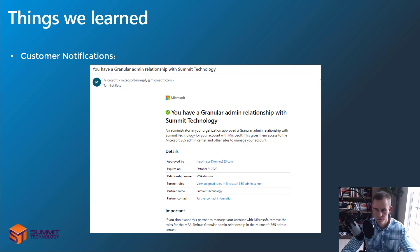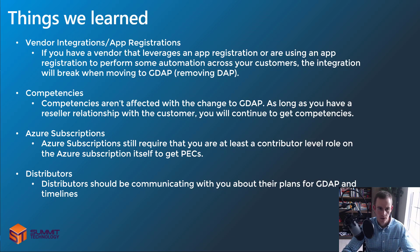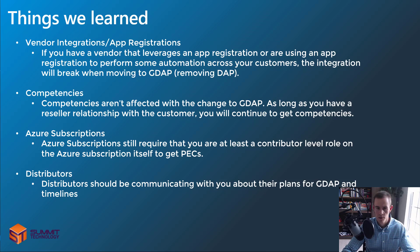Some other high-level things we learned: vendor integrations with app registrations that you're using with a pre-consent model for DAP — in the sense of all the downstream customers you access — will break when you move to GDAP and remove DAP relationships, or if you have a customer that has just a GDAP relationship to begin with. I've made a blog post detailing the use case, resolution steps, and timelines that you'll want to check out. If you're using vendors like IT Glue, Liongard, or CIPP — these are all vendors that use app registrations that will break when you move to GDAP and remove DAP relationships.